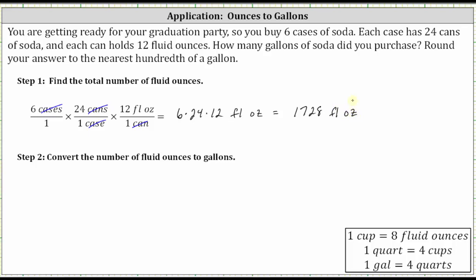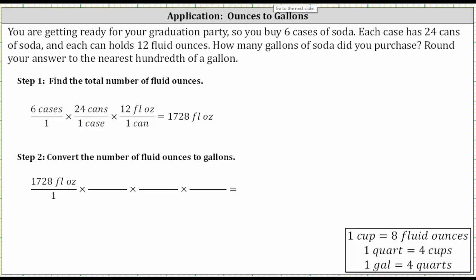Step two: we now convert 1728 fluid ounces to gallons by multiplying by unit fractions, using the conversions — one cup equals eight fluid ounces, one quart equals four cups, and one gallon equals four quarts. We begin by writing 1728 fluid ounces as a fraction with a denominator of one. Because we will be using three conversions, we will multiply by three unit fractions, and therefore the setup will look like this.